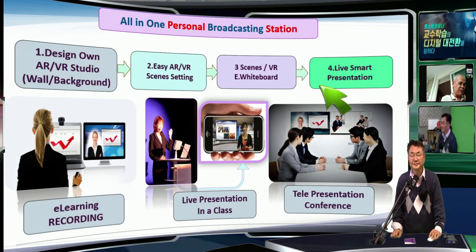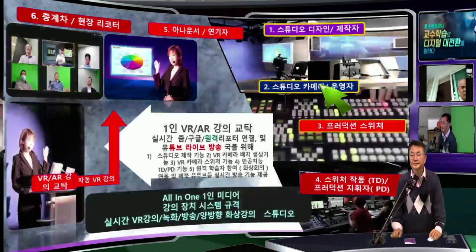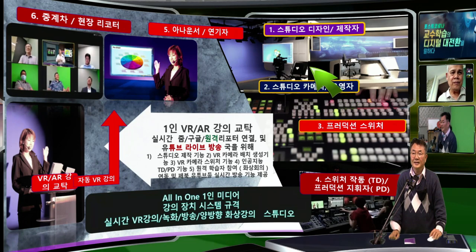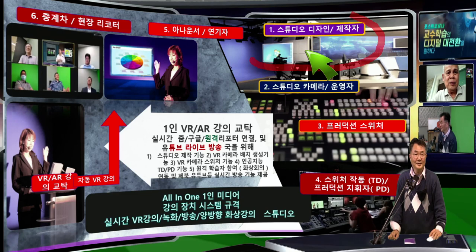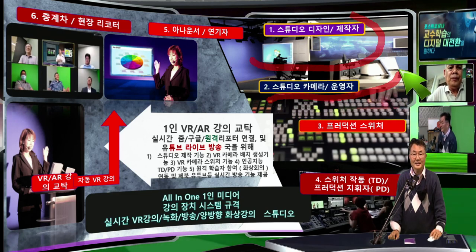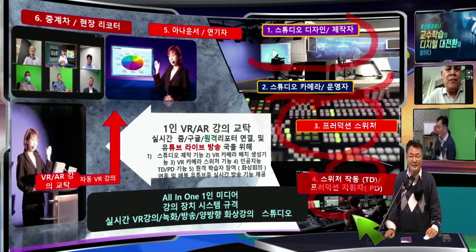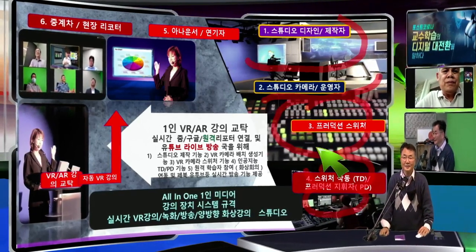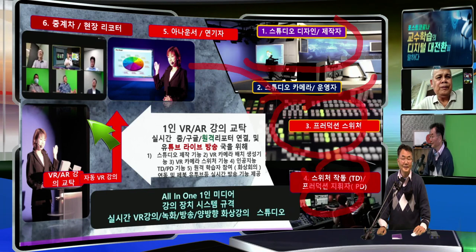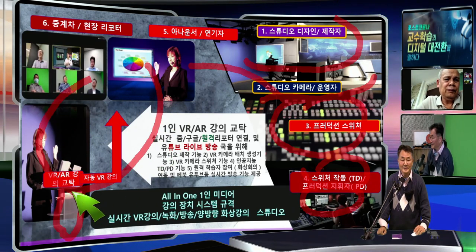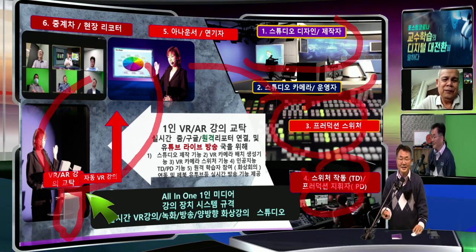If you look at a conventional studio, they have to construct a studio design with a cameraman and many cameras inside, connected to a production switcher. A production switcher operator, a technical director, and a production director all have to operate together with the announcer in the studio. We make everything using one machine.